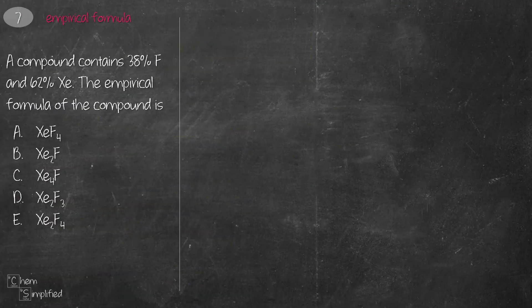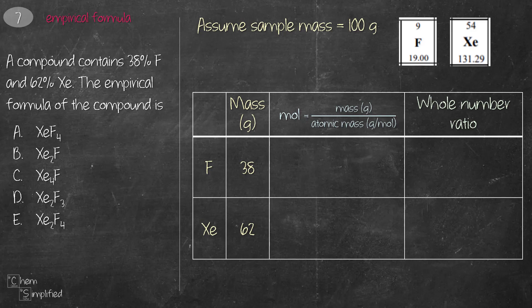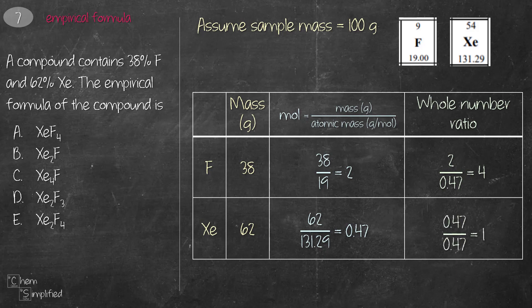This is an empirical formula question. We assume a sample mass of 100 grams, giving 38 g of fluorine and 62 g of xenon. We calculate moles by dividing mass by atomic mass: 38 ÷ 19 = 2 mol for fluorine, and 62 ÷ 131.29 ≈ 0.47 mol for xenon. Dividing by the smallest mole (0.47): F gives ~4, Xe gives 1. The empirical formula is XeF4, so the answer is A.